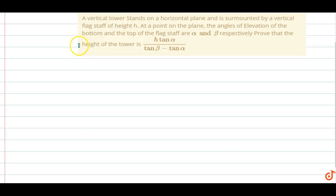In this question, a vertical tower stands on a horizontal plane and is surmounted by a vertical flag staff of height h. At a point on the plane, the angles of elevation of the bottom and top of the flag staff are alpha and beta respectively. Then prove that the height of the tower is h tan alpha upon tan beta minus tan alpha. So suppose this one is the tower.